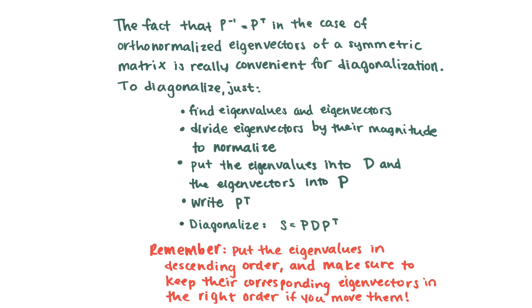So to diagonalize a square symmetric matrix, we just find its eigenvalues and eigenvectors, divide the eigenvectors by their magnitude to normalize them. We put the eigenvalues into D along the diagonal, and the eigenvectors into P as columns. We write P transpose, and we can just diagonalize it by saying that S equals PDP transpose. It's really important to remember, for later steps, to put the eigenvalues in descending order. So put them along the diagonal, from greatest to least, and make sure that they're still with their corresponding eigenvectors in the right space. So if you move an eigenvalue, you also need to move its eigenvector.